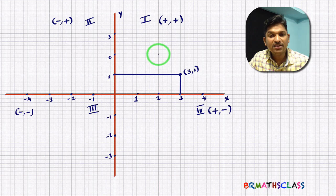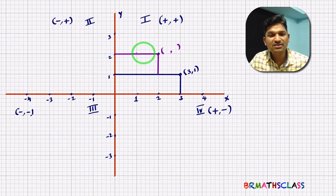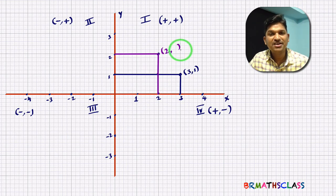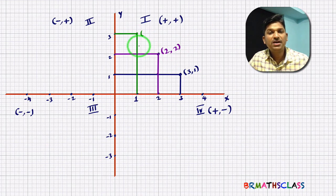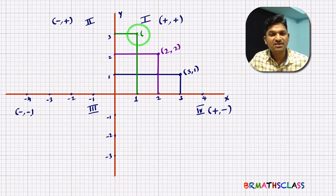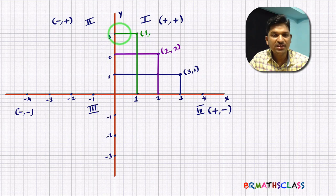Take this point: the x-coordinate — perpendicular distance from the point to the y-axis — is 2 units. The y-coordinate — perpendicular distance from the point to the x-axis — is also 2 units. So this point is (2, 2). Now observe this point: its x-coordinate is 1 unit from the y-axis, and its y-coordinate is 3 units from the x-axis, so this point is (1, 3).